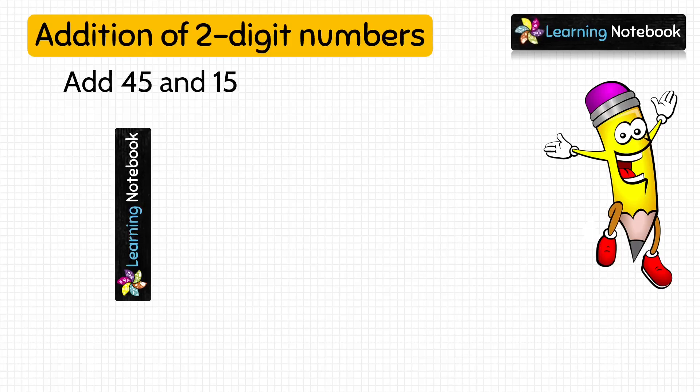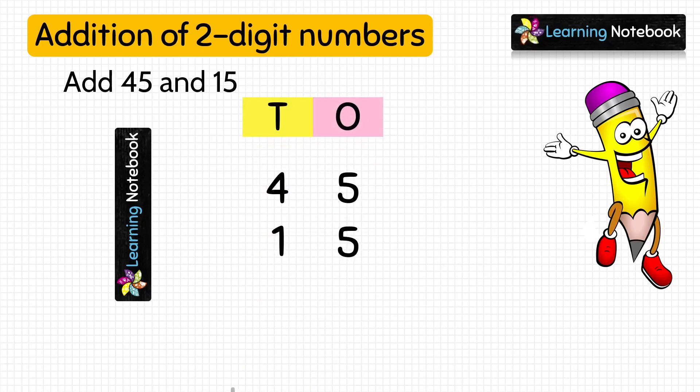Question is: add 45 and 15. So let's write the given numbers in column first. Now add the digits at ones place. 5 plus 5, which equals 10.